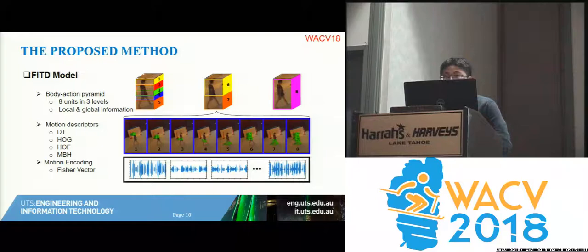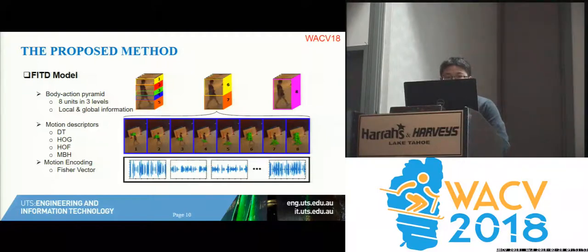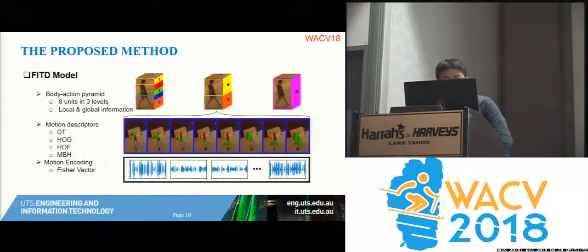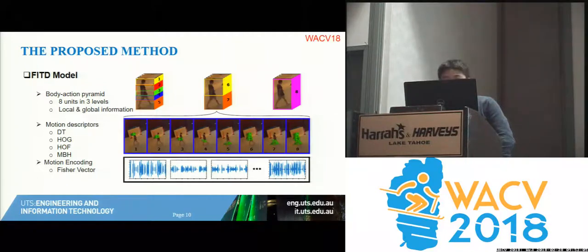For the body action pyramids, we use the whole body, upper body, lower body, or even fine segmentation of body parts. The features used to describe motion points include dense trajectories, HOG, optical flow, and motion boundary histograms. Here is an illustration of a person under a video surveillance camera — the moving points denoted by green indicate the motion used to describe the video.